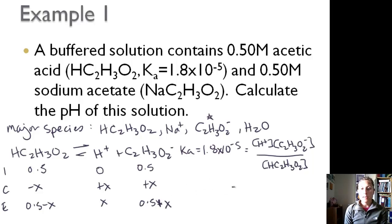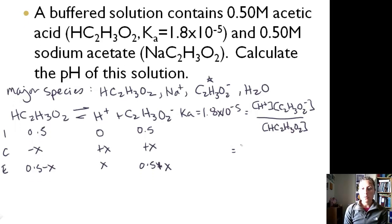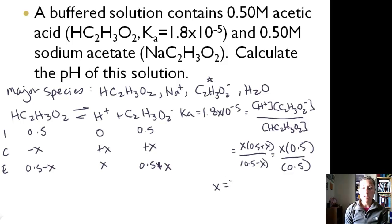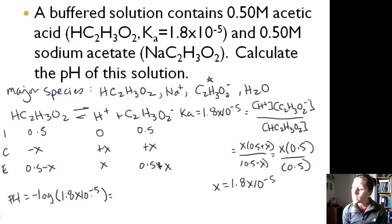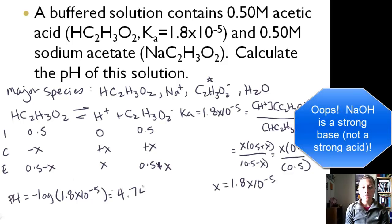If we plug that into our Ka and make our approximations, we have X times (0.5 plus X) divided by (0.5 minus X), which simplifies to X times 0.5 over 0.5. That gives us an X value of 1.8 × 10⁻⁵. Checking this against the original 0.5, the approximation of 5% or less checks out. So the pH equals negative log of 1.8 × 10⁻⁵, which gives us a pH of 4.74.